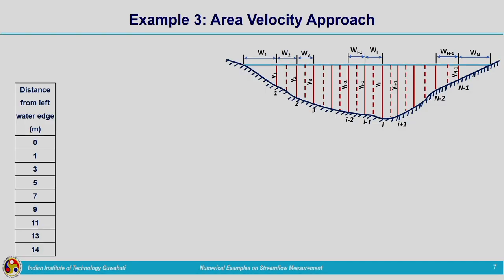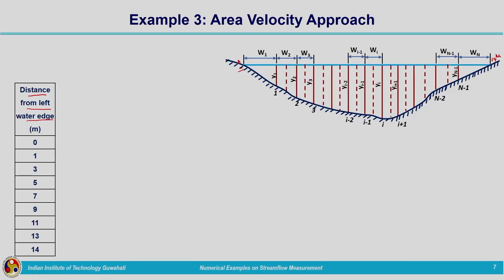Using the similar triangle principle, we can find the width of the extreme segments. A formula is derived for the average width of the first and last segments. The data given includes distance from the left water edge starting from 0 to 14 meters, so the entire width of the channel is 14 meters. This cross section has to be divided into strips and discharge is computed through each strip. The width of each strip is determined from the distances given.